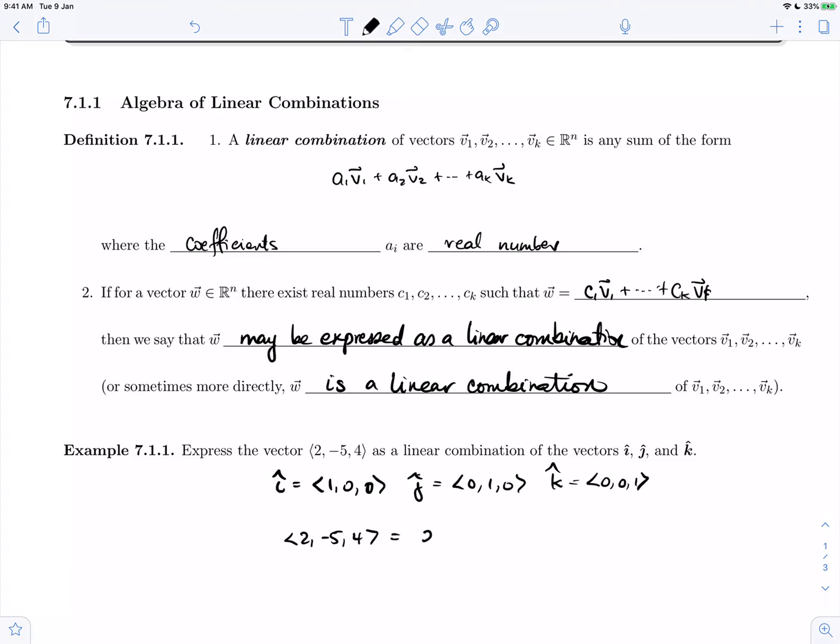So if we take our vector (2, -5, 4), we can split this up as 2 times the vector (1, 0, 0) plus (-5) times the vector (0, 1, 0) plus 4 times the vector (0, 0, 1).